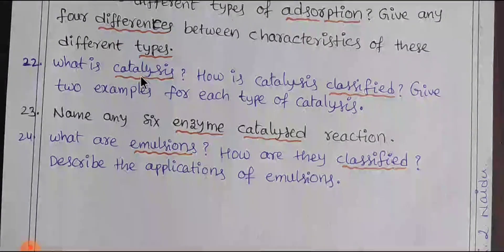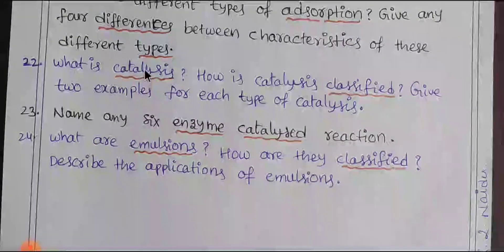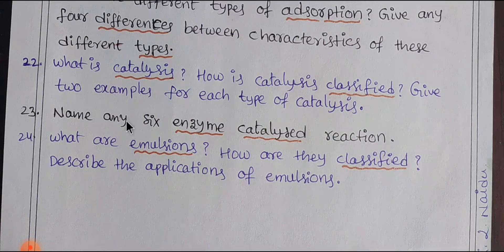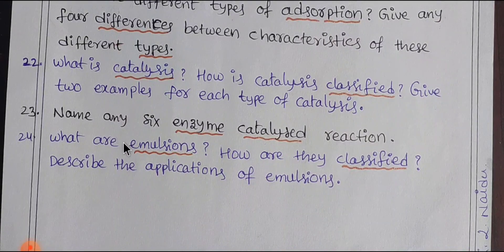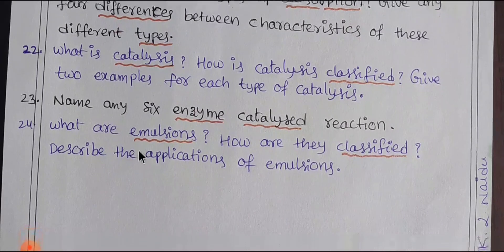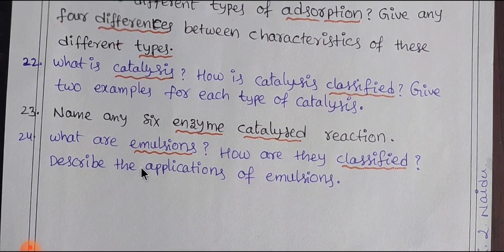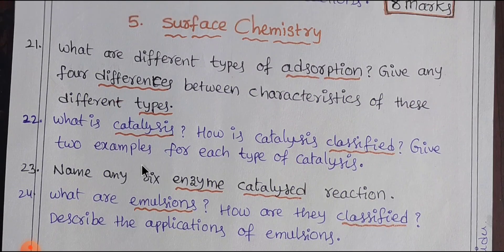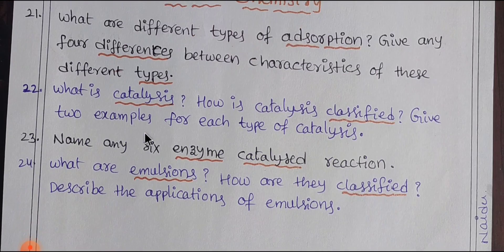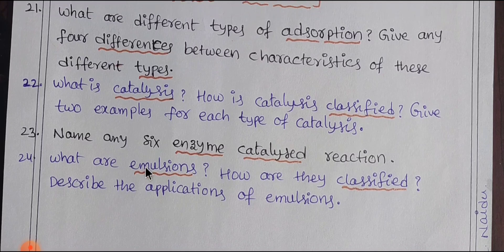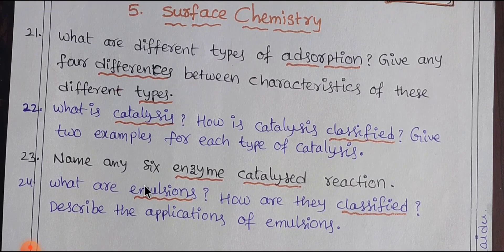Two examples are related to the phase — the gas phase, solid phase, and liquid phase — and the marks are listed accordingly. This covers the surface chemistry four-mark section.